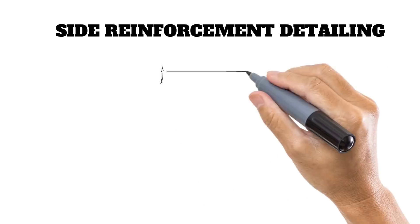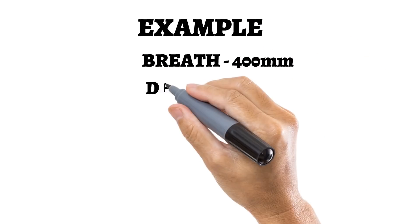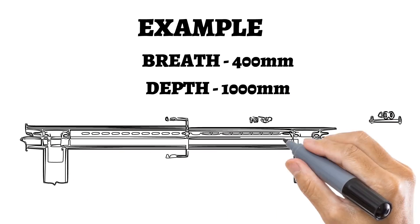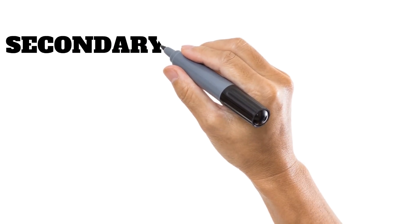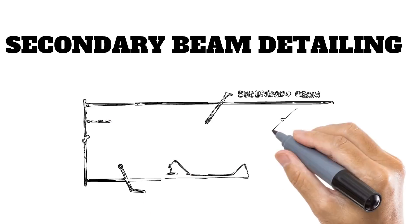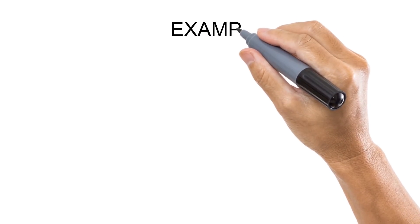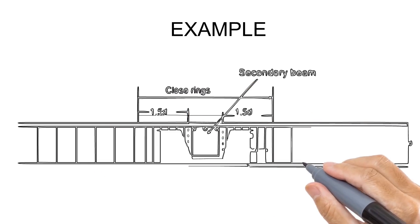For example, breadth 400mm, depth 1000mm, and reinforcement detailing section. Also, sixth one: secondary beam detailing — how do you explain this to the interviewer? For example, at the main beam and secondary beam joint area, rebar detailing — how do you explain this?